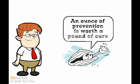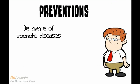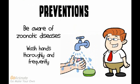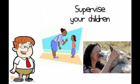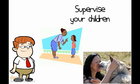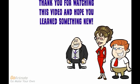Prevention is really important. As some people may say, prevention is better than cure, or an ounce of prevention is worth a pound of cure. Here are some preventions: Be aware of zoonotic diseases and your potential for infection. Wash hands thoroughly and frequently after petting an animal. Supervise your children to ensure they wash their hands properly and avoid hand-to-mouth activities such as thumb sucking or eating after animal contact, or even kissing your pet. Vaccinate your pets against rabies and also yourself. Avoid handling stray animals.